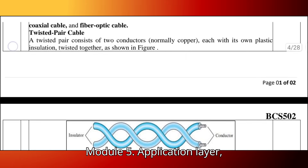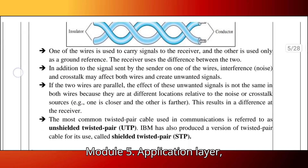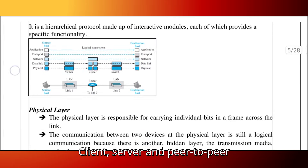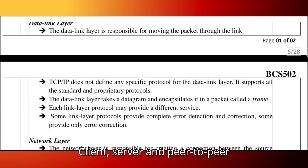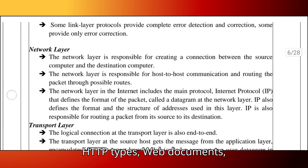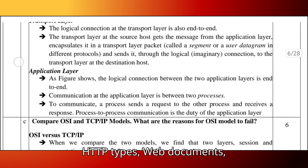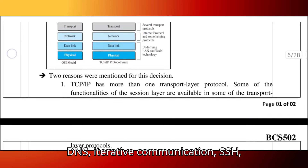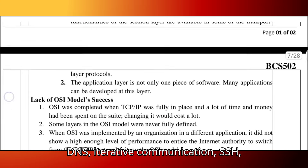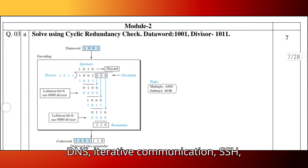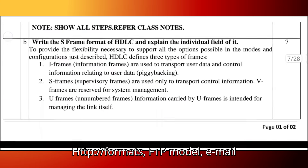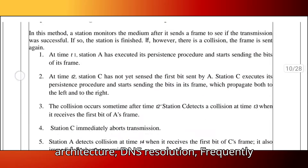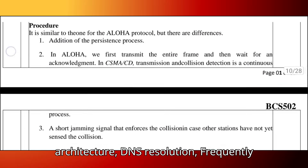Module 5 covers the application layer, including client-server and peer-to-peer models, HTTP types, web documents, DNS, iterative communication, SSH, HTTP formats, FTP model, email architecture, and DNS resolution.